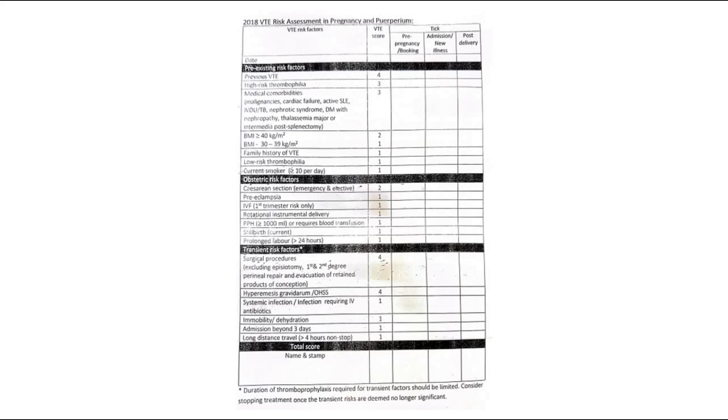This is a table of risk assessment of patients for their risk of having VTE. Pre-existing risk factors include previous VTE, high-risk thrombophilia, medical comorbidities like malignancies, cardiac failure, SLE, renal diseases, high BMI, family history of VTE, or active smoker.